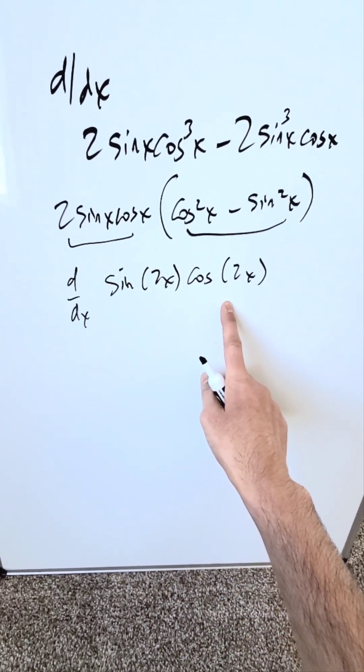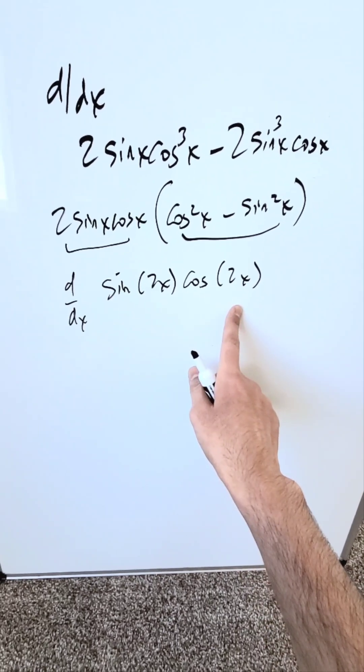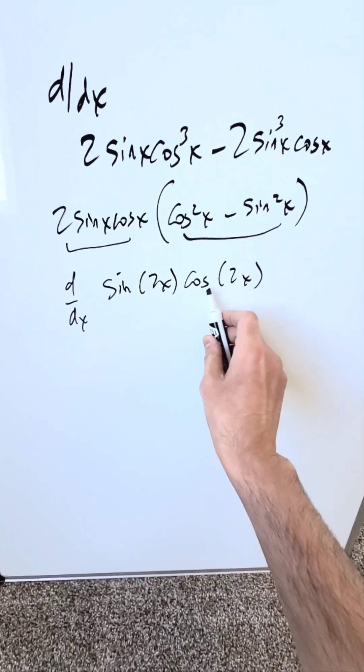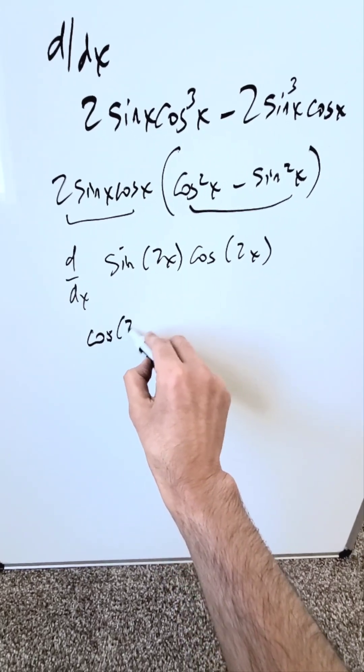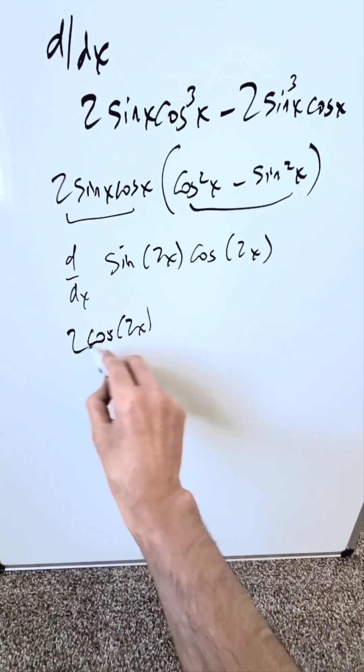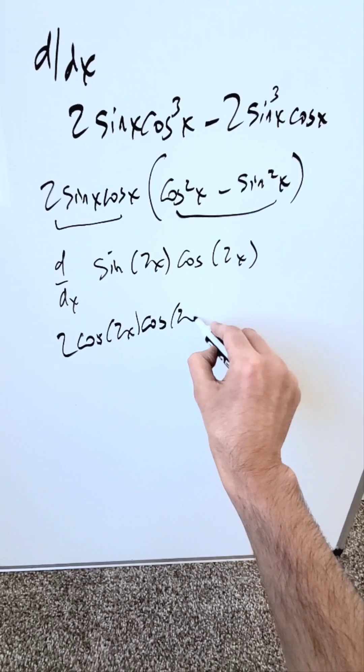I am going to run this through the product rule. Any other chain rule will come in easily. It's not hard. I'll pick this as my g function and do the derivative of the f function. I will have here cos(2x) times the derivative of sin(2x). 2 will come out. Then I'll have a cos(2x) plus.